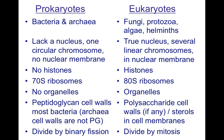One thing you should know about eukaryotes is that we humans all have eukaryotic cells. So if you have a fungi infection, a protozoa infection, algae infection, or helminth infection, it's going to be kind of hard to cure this because these organisms have similar cell structures to ours. So the antibiotics given to cure this might be damaging to human cells.